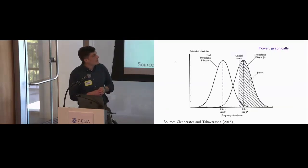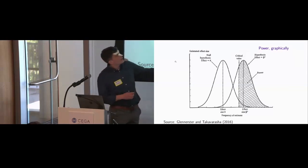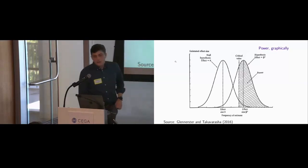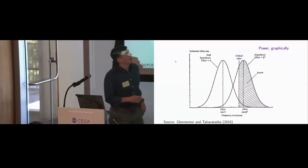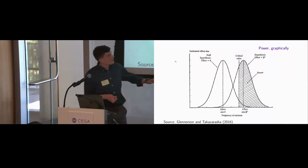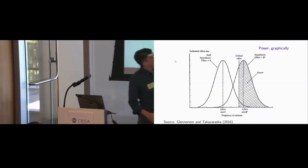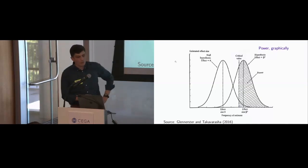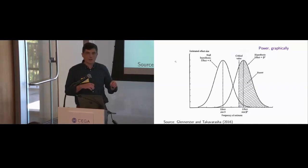We can also see this graphically. The first curve is the null hypothesis for an effect size of zero. We've set a critical value alpha — at 0.05 — so for any effect size above that critical value, we reject the null hypothesis. The other curve is our distribution of effect sizes under a true effect of beta star. The power is the area where we wind up rejecting for beta star when we're getting the true effect size.